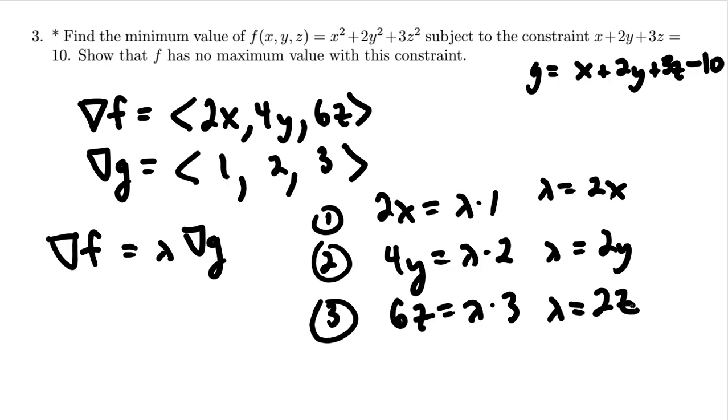So then that would tell us that these have to be equal to each other. This would tell us that x is y. This would tell us that y is z. And then we also could see that x and z are the same. That's what we get out of this, that this critical point on the constraint is going to be all the values equal to the same value.